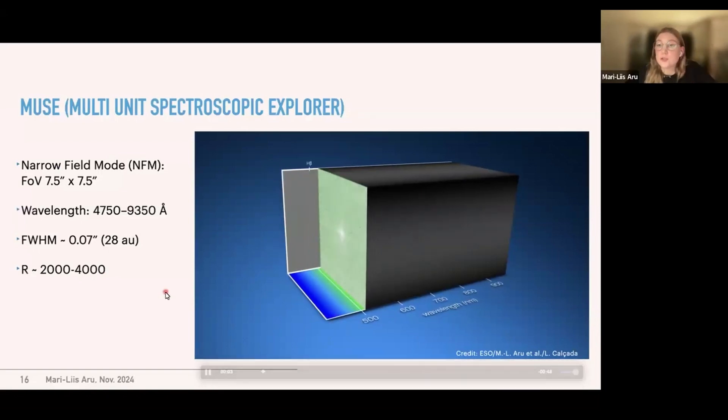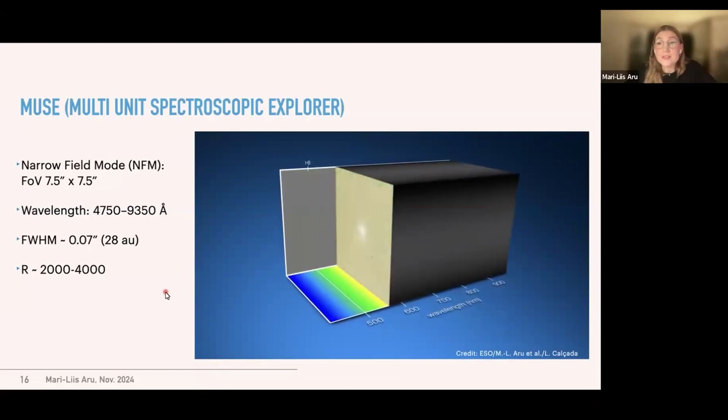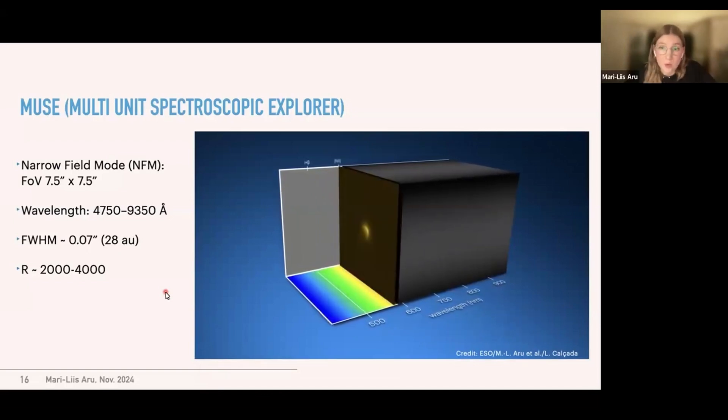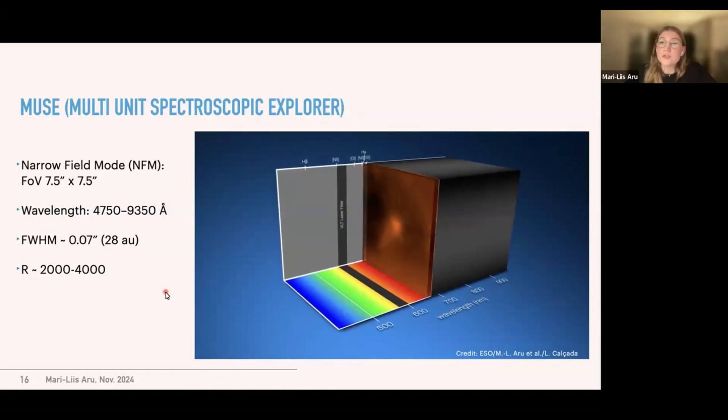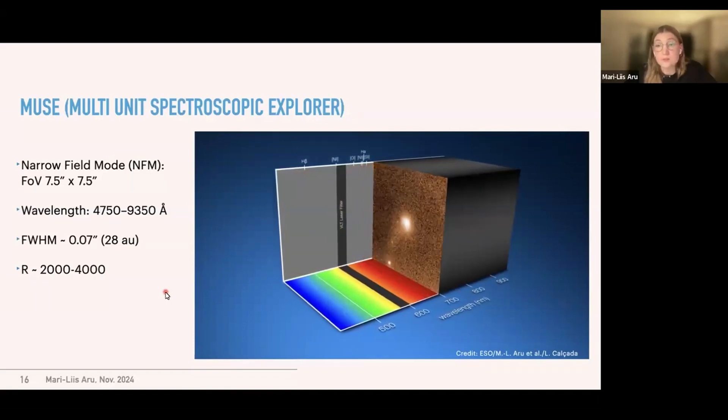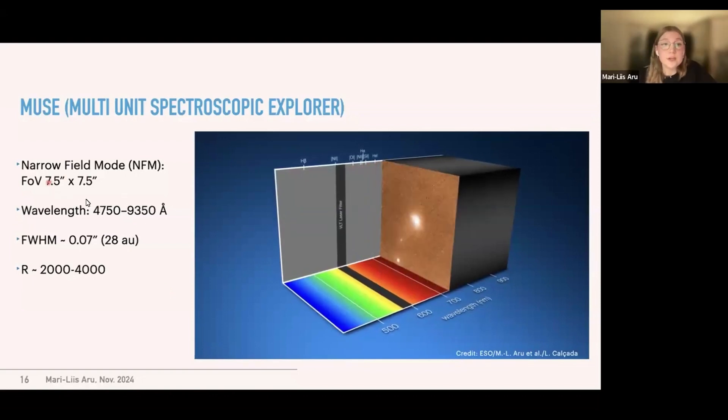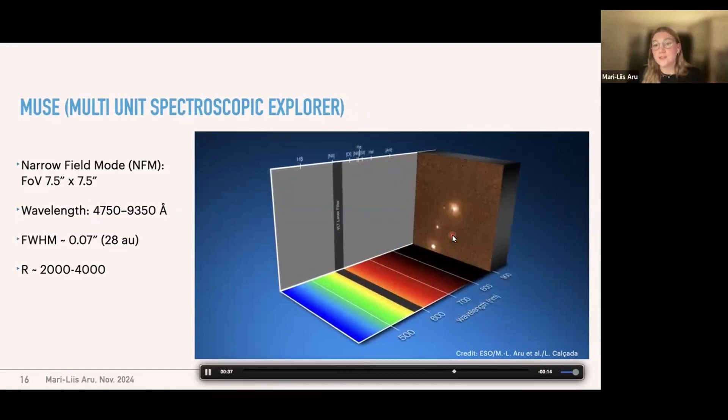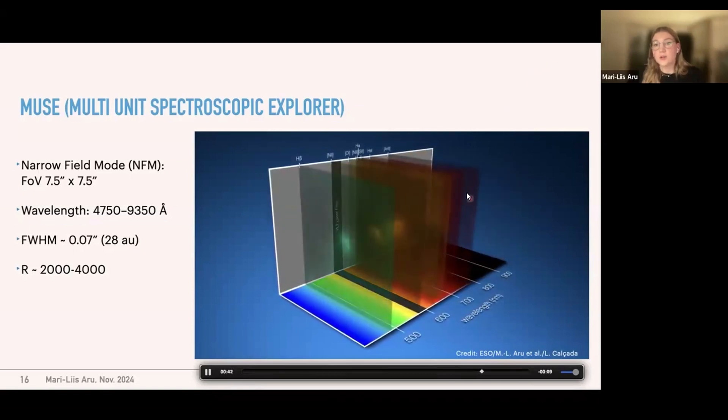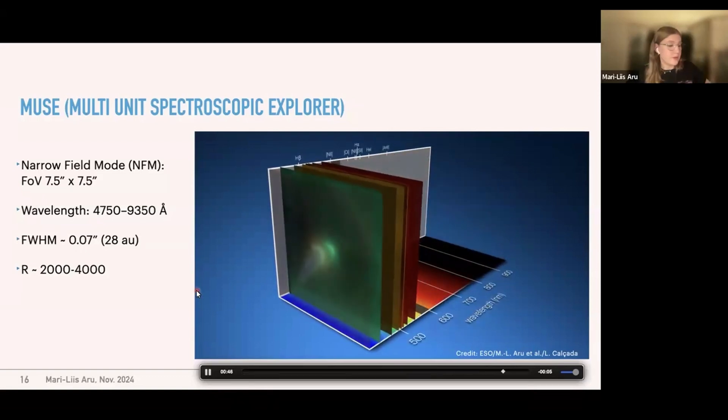But today I want to focus on MUSE. MUSE is a multi-unit spectroscopic explorer. It is an integral field spectrograph. And this video illustrates the power of MUSE. So you can see us scanning through this optical wavelength that MUSE covers. And the observations have been taken in narrow field mode. So the field of view is given in here. And some of the observational parameters are also given in here. And here we're scanning through one system. And it all comes down to this RGB view in the end.